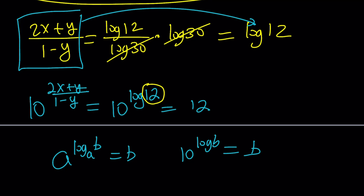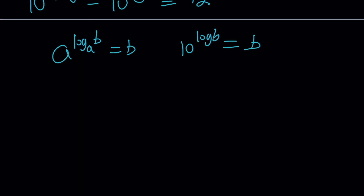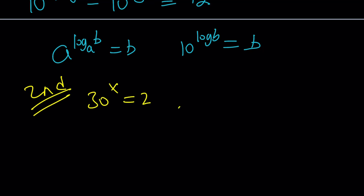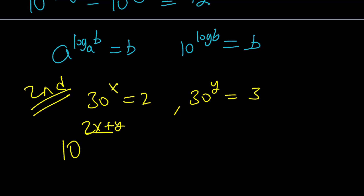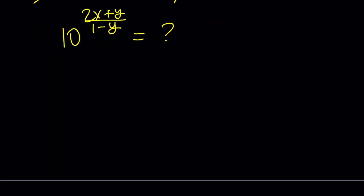Let's look at the second method. Our expression is 30 to the power x equals 2 and 30 to the power y equals 3, and we need to evaluate 10 to the power 2x plus y divided by 1 minus y.